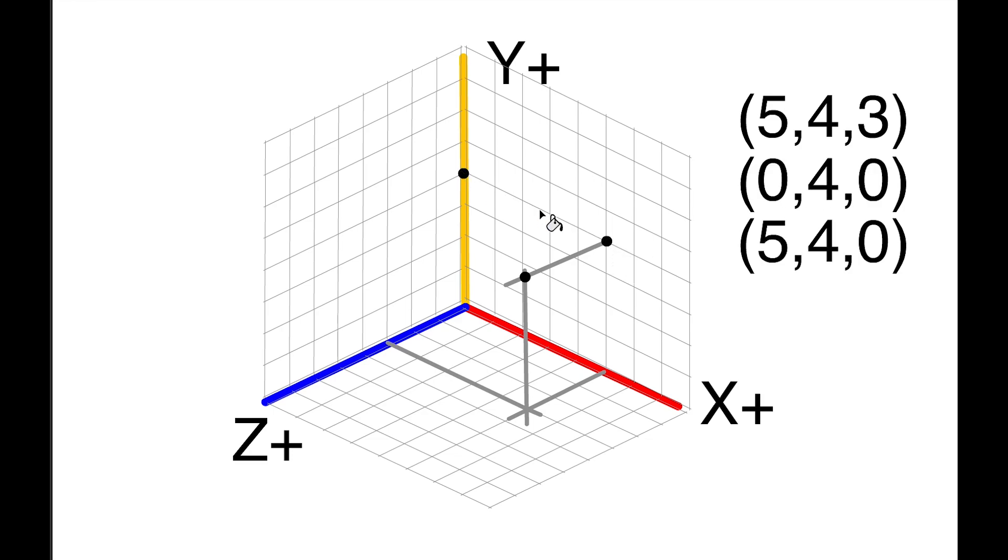If we introduce two more points—so that's our original point—and now we have a point over here where X is 0, Y is 4, and Z is 0, and a point over here where X is 5, Y is 4, and Z is still 0. We can introduce a triangle defined by those three points, often referred to as vertices.